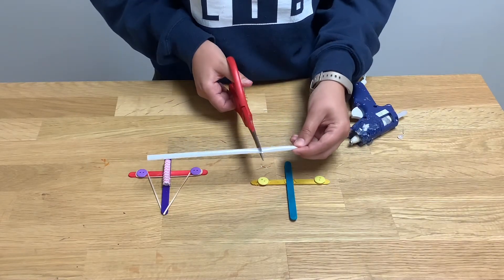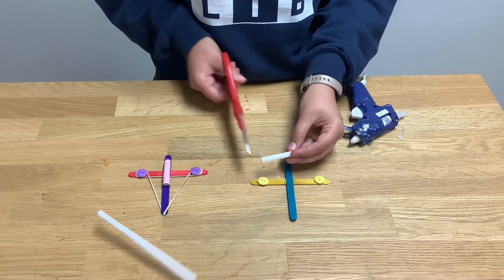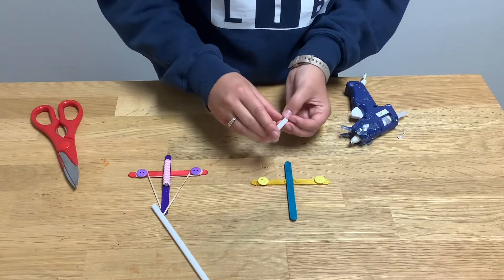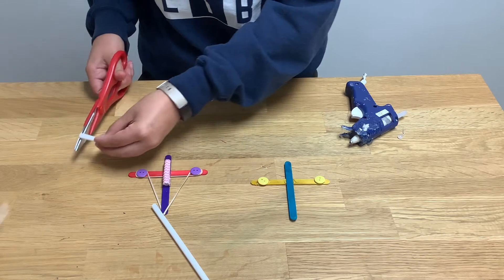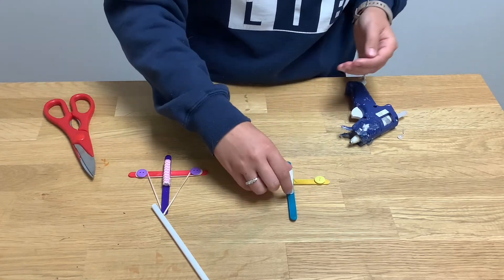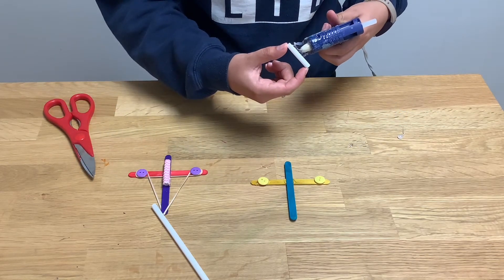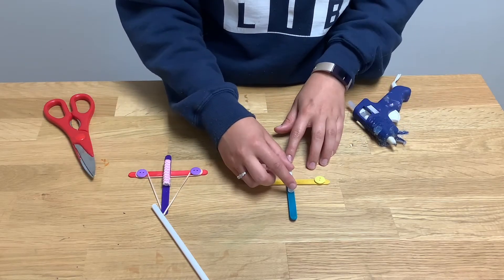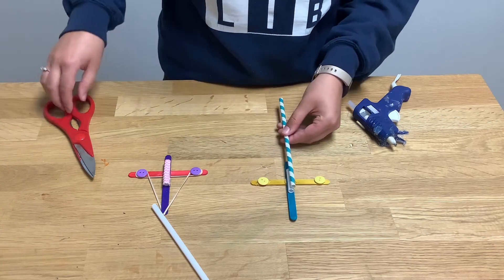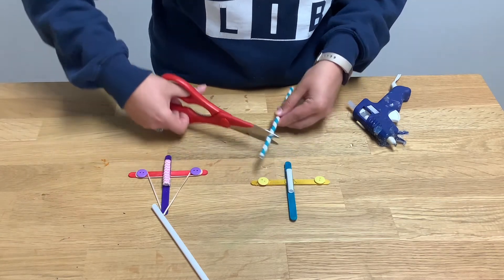So now we need a holder for our Q-tip. So you want to get a straw that is wide enough that the Q-tip can freely go through it and doesn't get stuck on either end. And you want to cut it so it's long enough that the Q-tip will, both ends will be hanging out of it when it's glued down. And you're just going to glue that in the middle section of your crossbow.